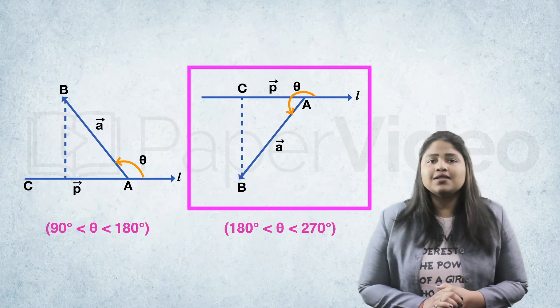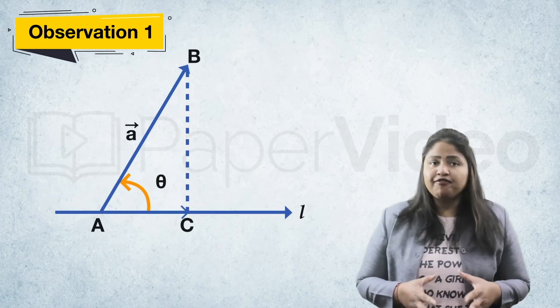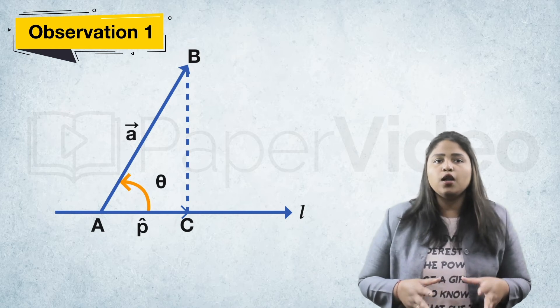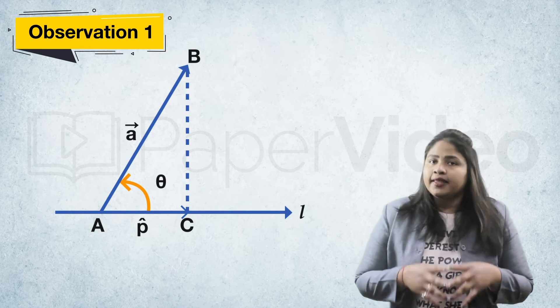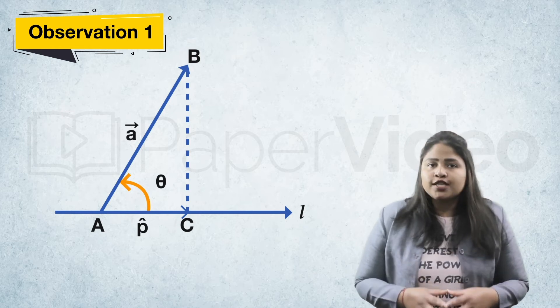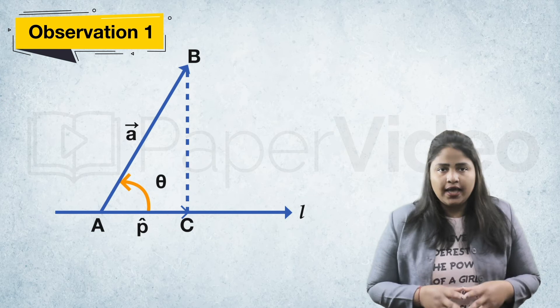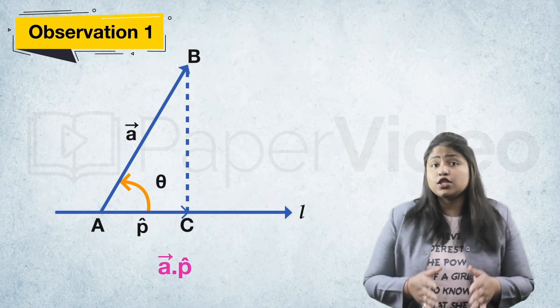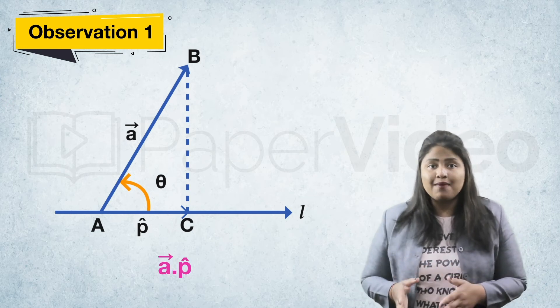Let us now discuss some observations of the projection of a vector on a directed line. According to the first observation, if P-cap is a unit vector along a directed line L, then the projection of vector A on the line L is given by vector A dot P-cap.